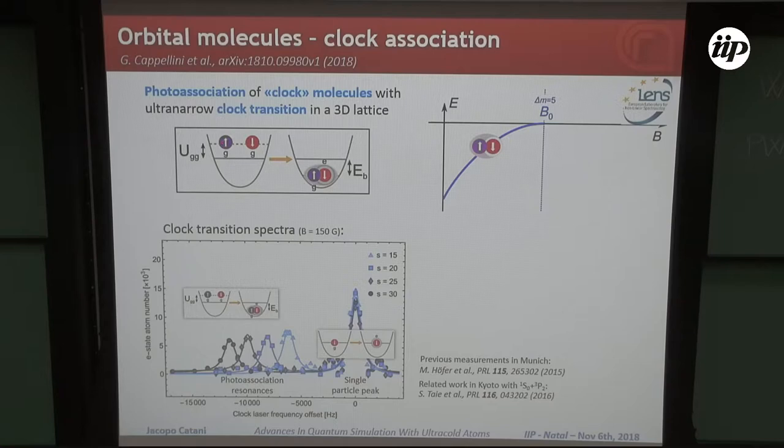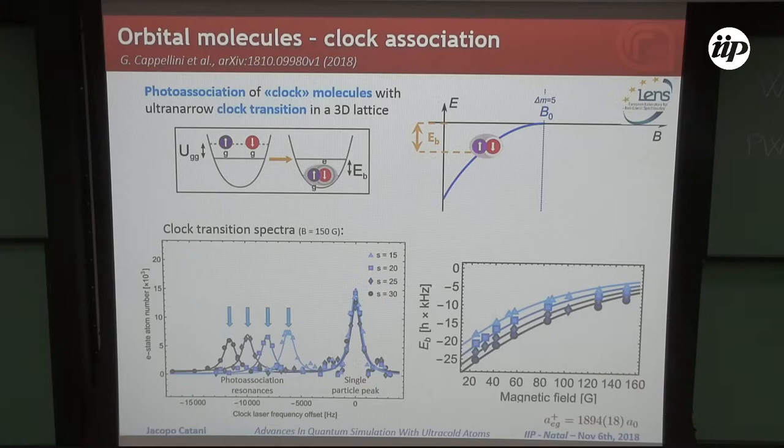This difference is indeed given by the sum of the on-site interaction energy, which is easily calculable or we can even measure, we did this, plus the binding energy. Then we also replicated these measurements as a function of magnetic field and for different values of trapping lattice depth.